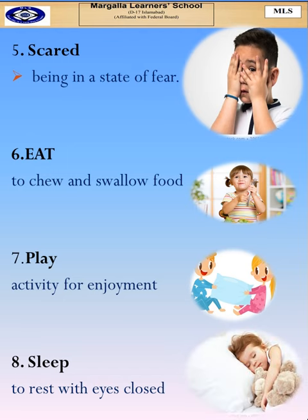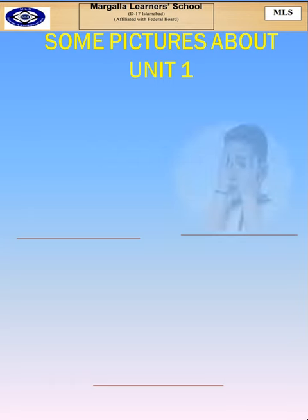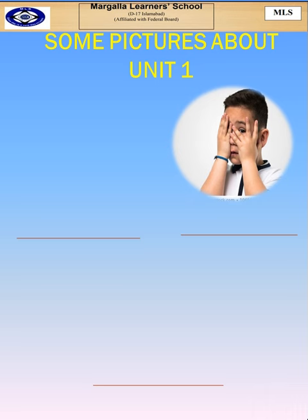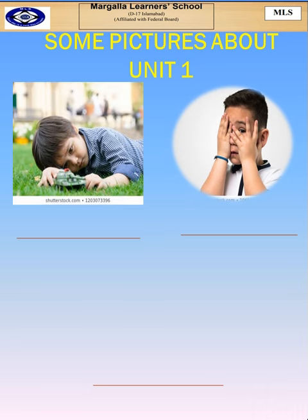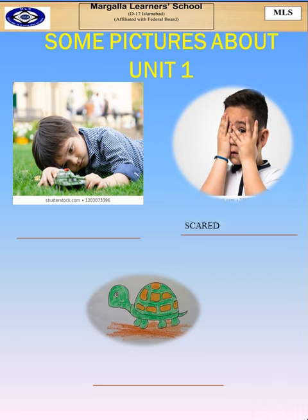I have extracted some pictures from unit one. I want you to guess which picture belongs to which word. What do you think about the first picture? You're right — he is scared. What do you think the second picture shows, and how is the boy feeling? He's lonely. And what about the last picture? You're right — it's a tortoise.